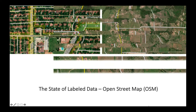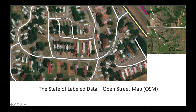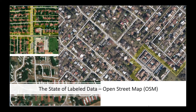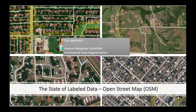In some suburban areas, houses are only partially labeled, and even in some populated cities, houses are not labeled at all. We try to address the inaccuracy in labeled data by using a feature-weighted CycleGAN and incremental data augmentation, which we will discuss in detail.